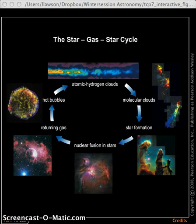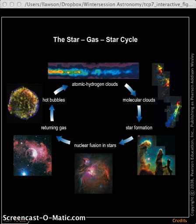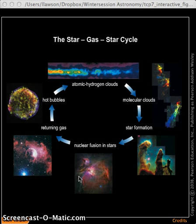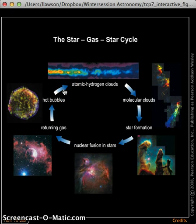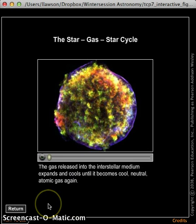We've mentioned it before. In this chapter, we learn about and talk about the star-gas-star cycle. This is basically a circle of life for stars — how they're formed, then they die, and the material they expel during their death goes out into space and becomes material for the next generation of stars. This is a nice animated illustration we can use to understand this cycle.